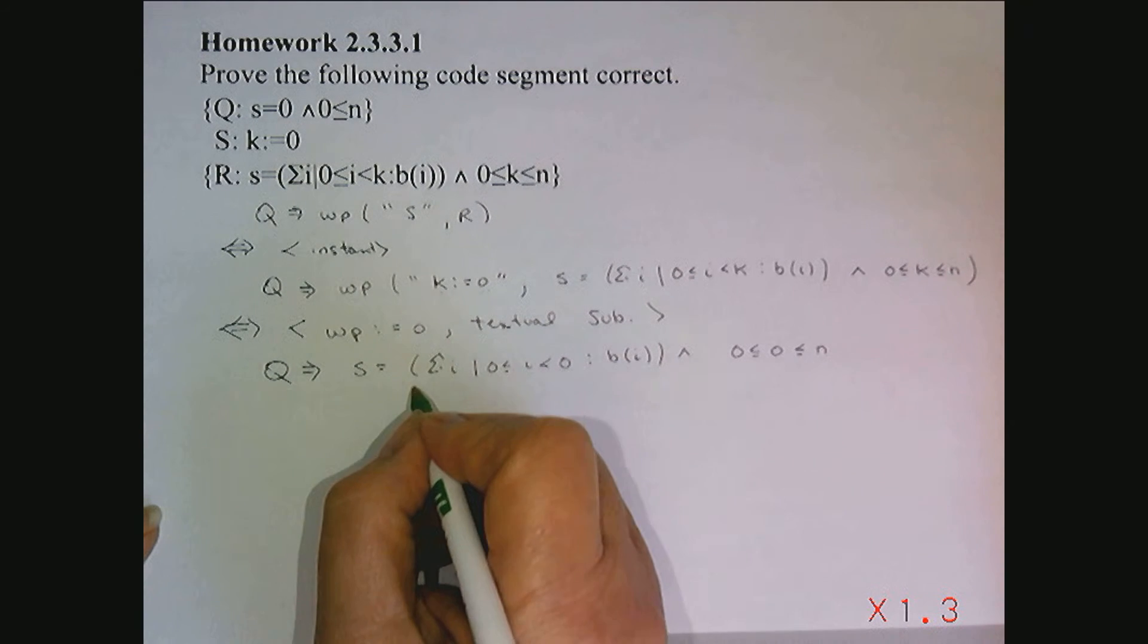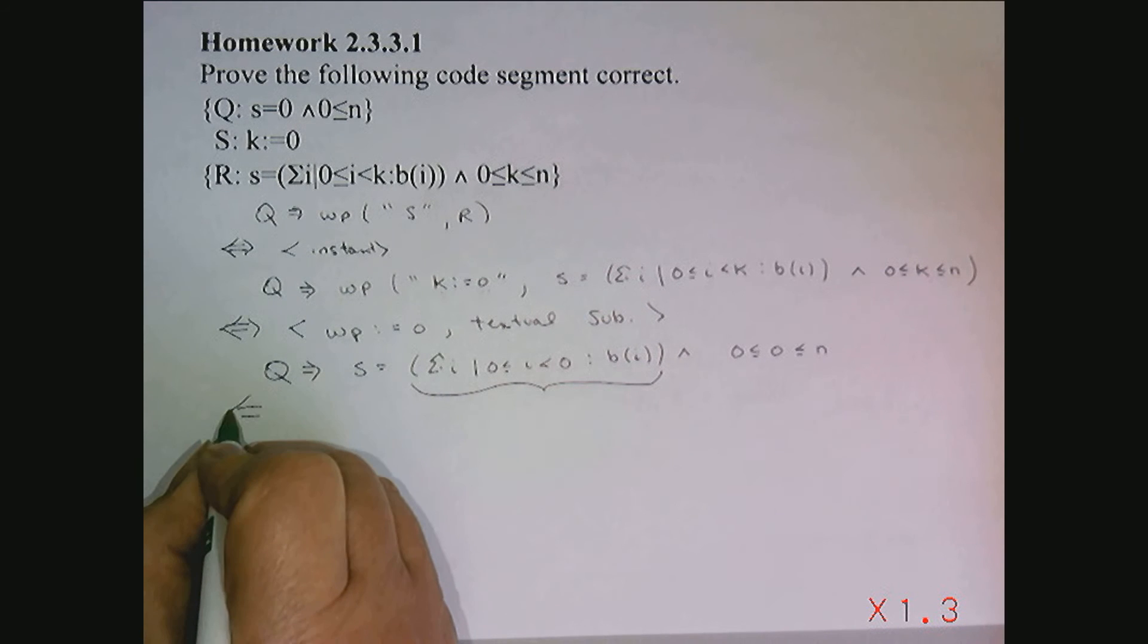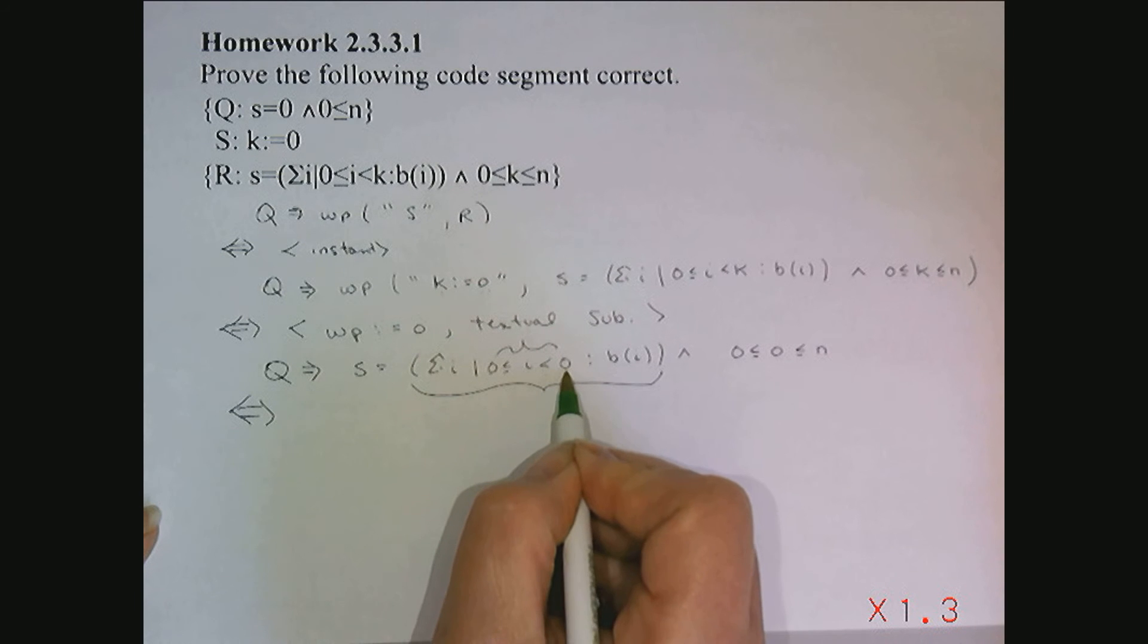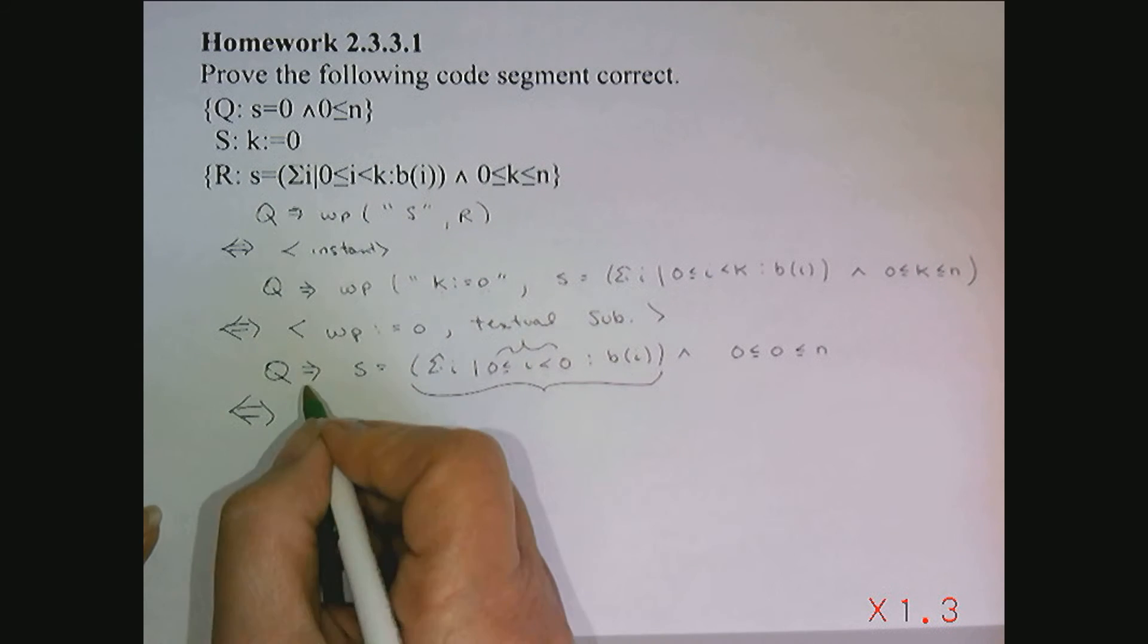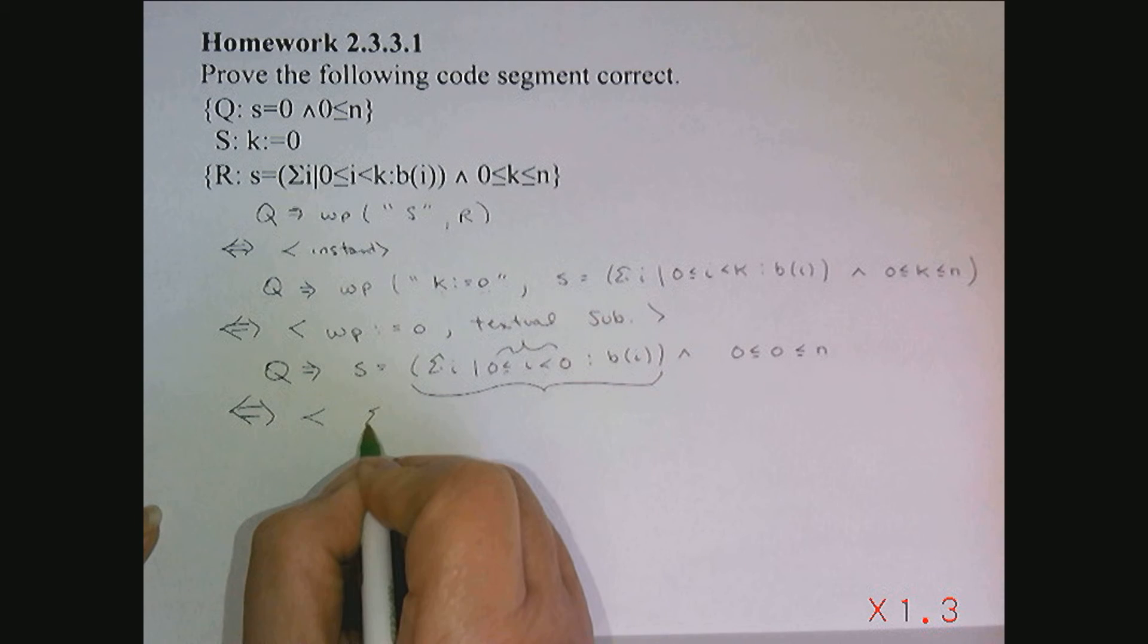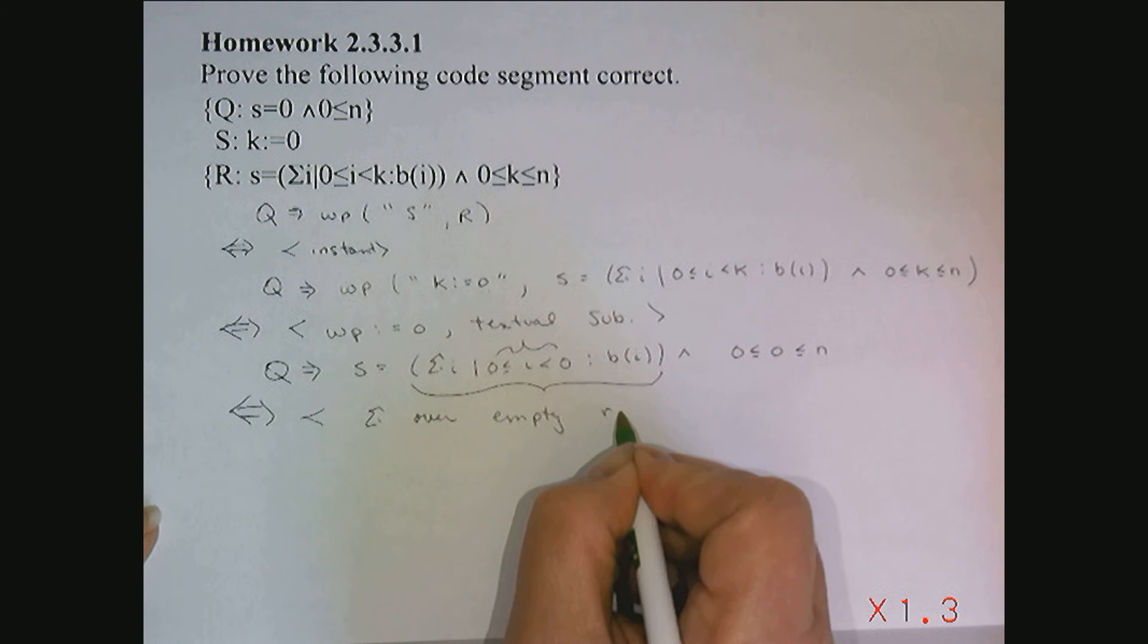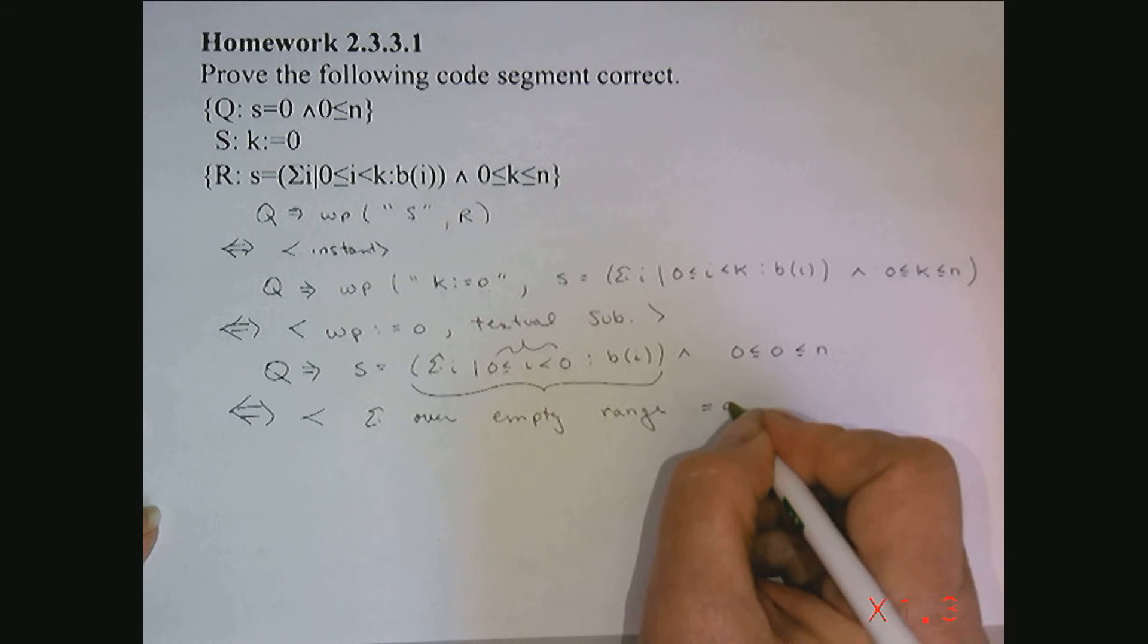Now, if I look at this sum, and I look at the range, 0 less than or equal to I, less than 0, there is no number in that region. So what I'm needing to do is to simplify the sum over an empty range, and I know that simplifies to 0.